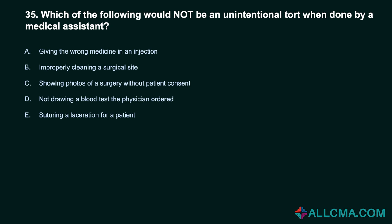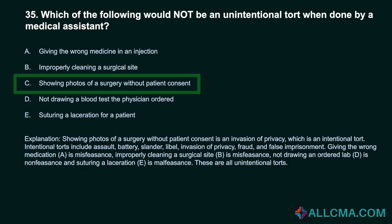Question 35: Which of the following would not be an unintentional tort when done by a medical assistant? a) giving the wrong medicine in an injection, b) improperly cleaning a surgical site, c) showing photos of a surgery without patient consent, d) not drawing a blood test the physician ordered, e) suturing a laceration. Correct answer: C, showing photos of a surgery without patient consent. This is an invasion of privacy, which is an intentional tort. Intentional torts include assault, battery, slander, libel, invasion of privacy, fraud, and false imprisonment. Giving the wrong medication is misfeasance, improperly cleaning a surgical site is misfeasance, not drawing an ordered lab is nonfeasance, and suturing a laceration is malfeasance — all unintentional torts.